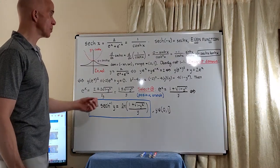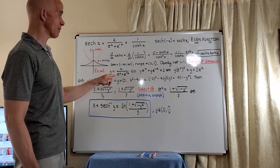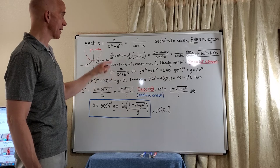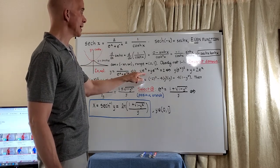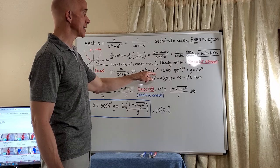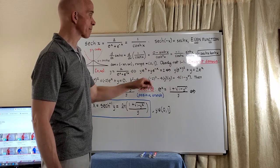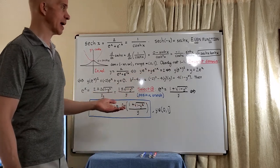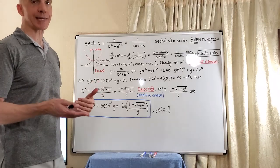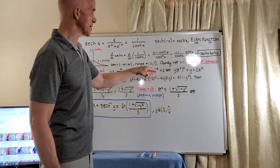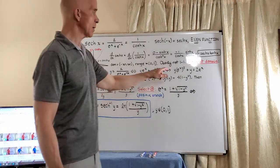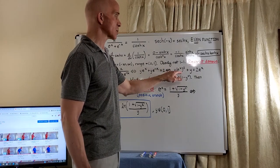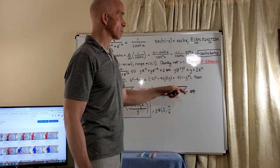So what we do is we solve for x as we've done before. So we cross multiply here from the definition and we get y e to the x plus y e to the negative x equal 2. And then the same routine as we had before, we want to create quadratic in e to the x. So we multiply this equation by e to the x and we get y times e to the x squared plus y equal 2 e to the x.